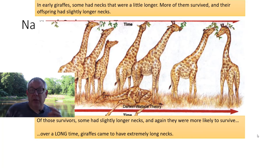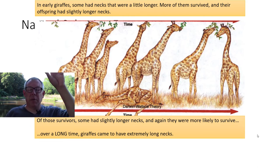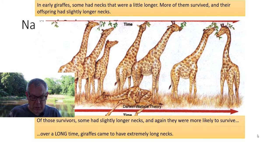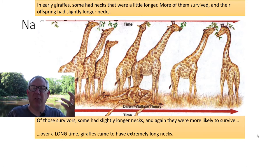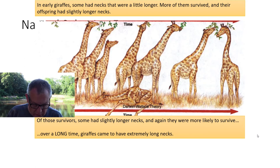Back to the classic giraffe example: early giraffes had variation in their necks — some had short necks, some a little longer, some medium. Because of the environment, because food was up high, those with longer necks were more likely to get the limited resources, more likely to survive, and more likely to reproduce. Over a long time, all the short-neck and medium-neck giraffes died off, and all that's left are long necks. Although there was variation in neck length early, over a long time you have one trait that's very enhanced.